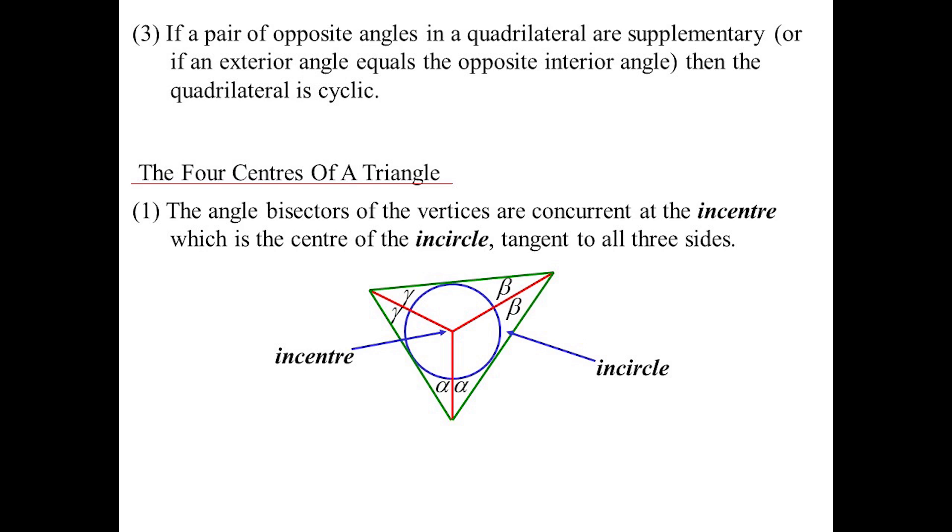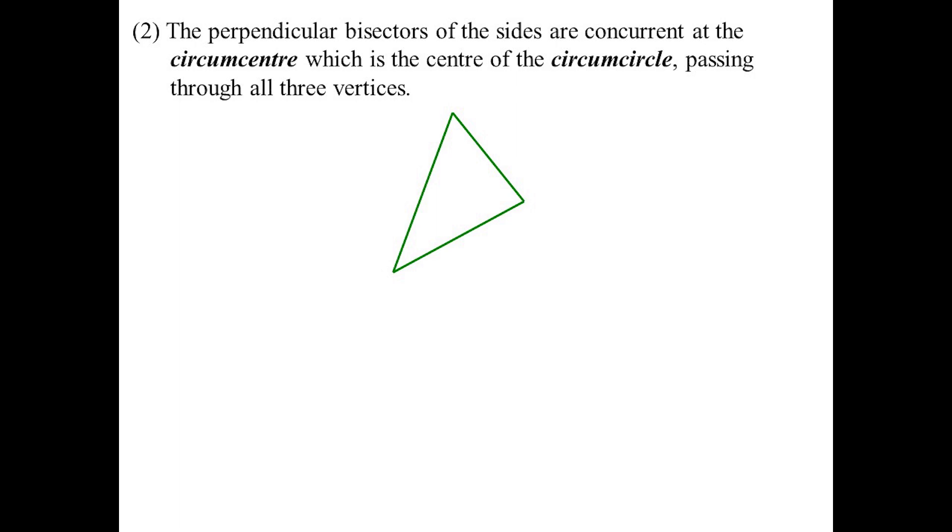Then you've got the perpendicular bisectors. Draw in the perpendicular bisectors, they also will go through the same point, and that's what we call the circumcenter because we create a circumcircle going around. What we've created there is perpendicular from the center bisects the chords. That's how you find the center of a circle - draw up two chords, find the perpendicular bisectors of both, where they meet it's got to be the center.